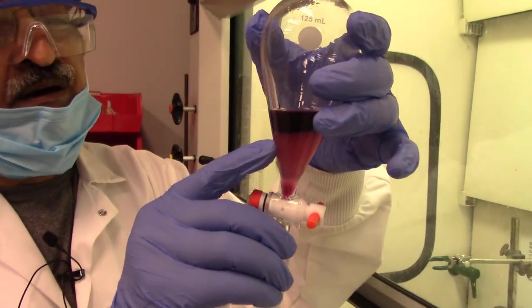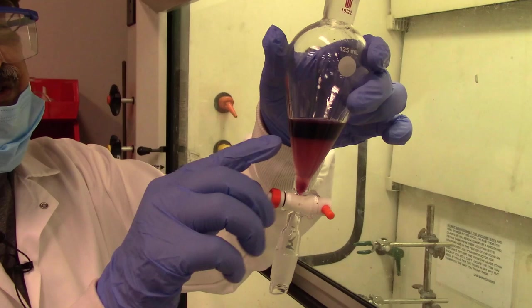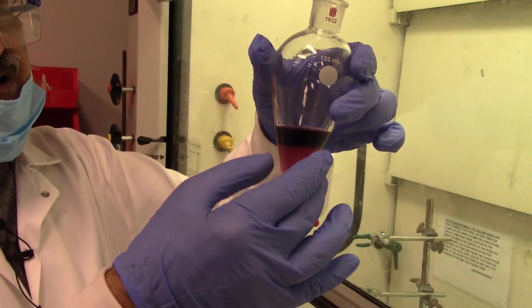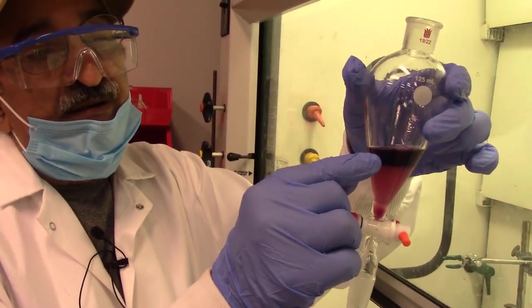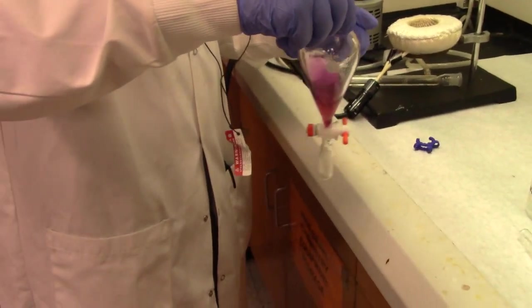Now you should see two layers clearly in the separatory funnel. Lower layer is aqueous layer, which should have acetic acid and sulfuric acid in there. And the upper layer is your product. It's darker in color, but as I mentioned before, don't worry about it. It will become clear later.